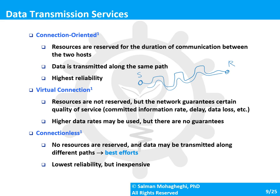The opposite is connectionless, where no resources are reserved and data is transmitted along any available path — this is the packet switching example, also known as the best-efforts approach. There are no guarantees about correct ordering or delivery. The main reason to use this approach is cost: a communication network can be set up much more inexpensively. For applications where the highest quality of service is not critical, connectionless approaches are quite sufficient.